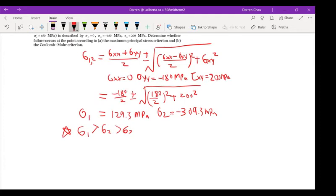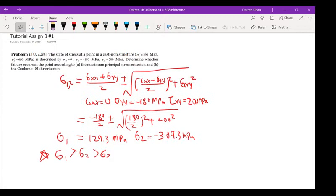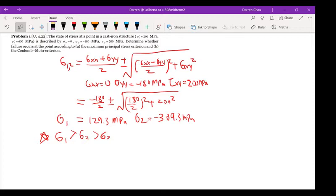Once we figure out the principal stress, we are using the maximum principal stress criteria to check if the material is going to fail for part A. So for part A, we are going to use this equation to verify whether the material would fail or not.